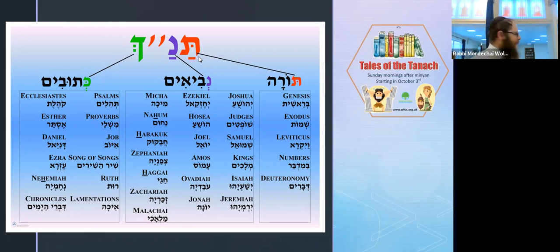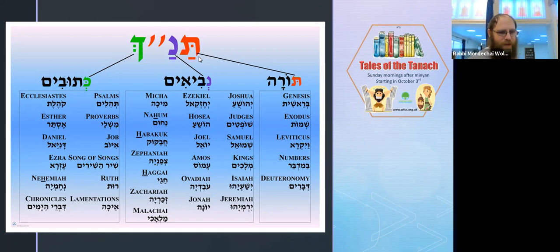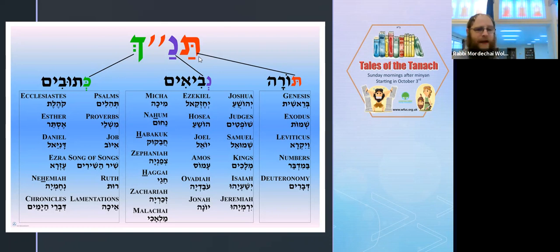Then you have the classic prophets: Isaiah, Jeremiah, Ezekiel. Hosea - not to be confused with Joshua - he's the first of the 12 minor prophets. So the major prophets are Isaiah, Jeremiah, and Ezekiel. And then you have what we call the 12 minor prophets, which is all in one book.